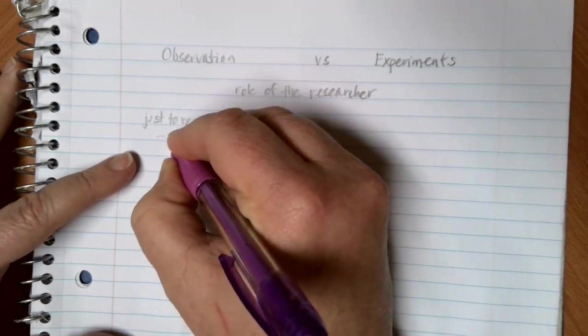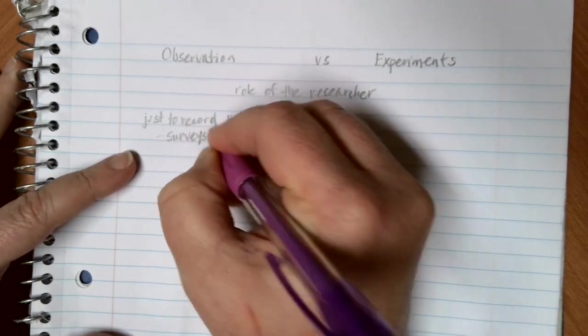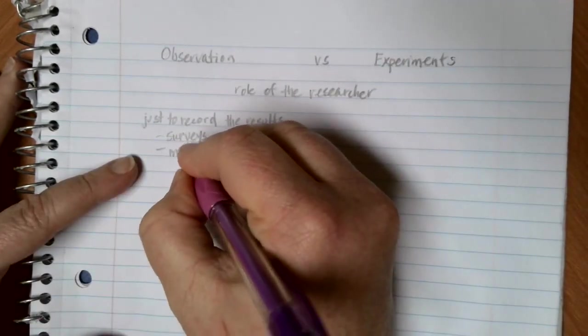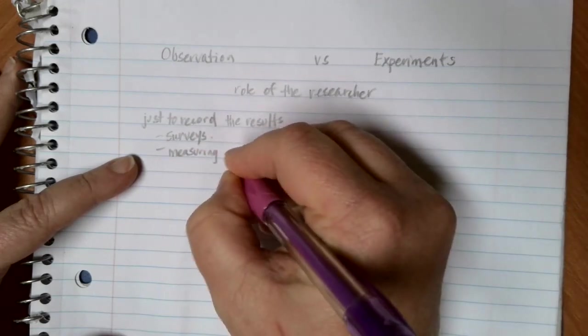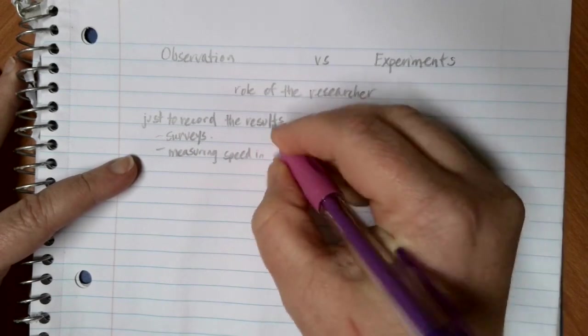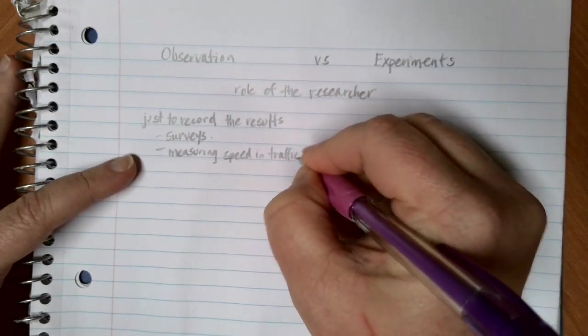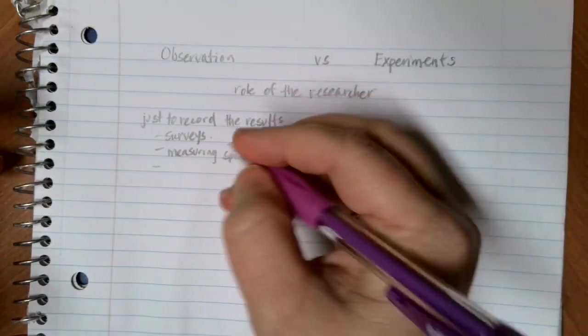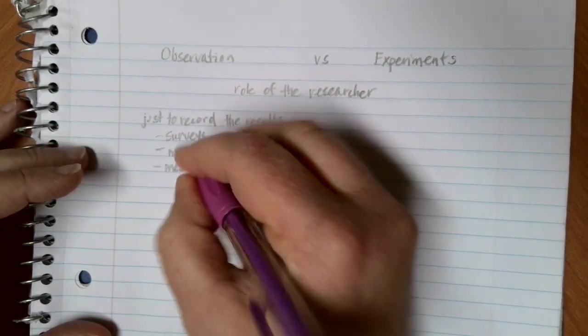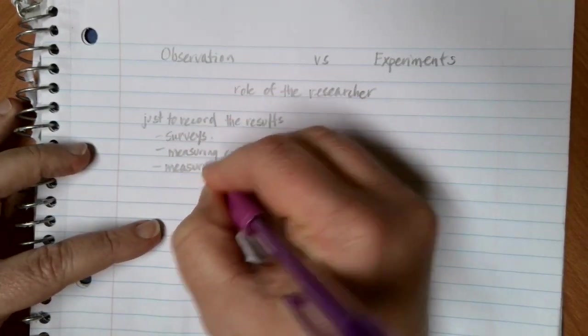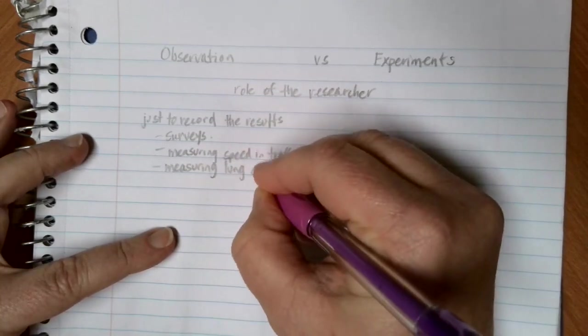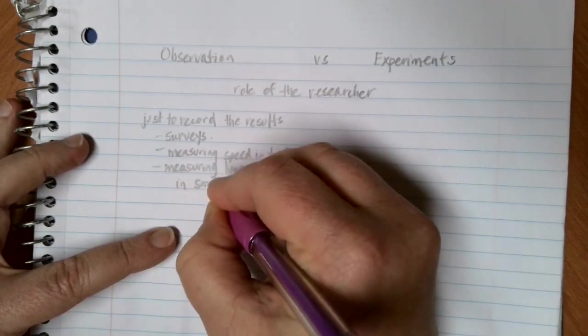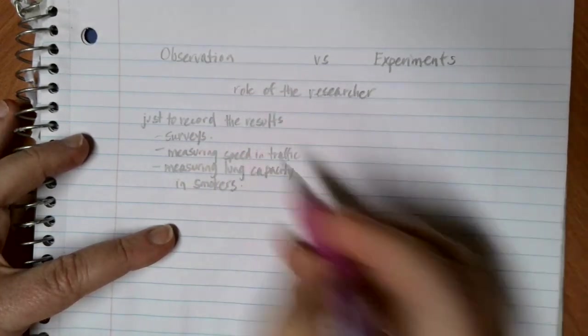So things like surveys would count as observational. Things like measuring speed in traffic would be an observation. Even something like measuring lung capacity in smokers would be considered an observation.